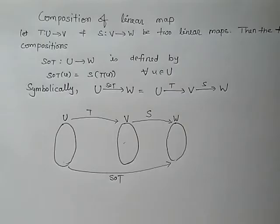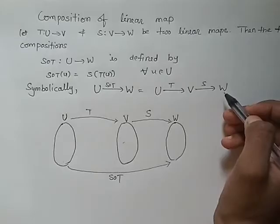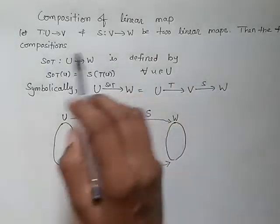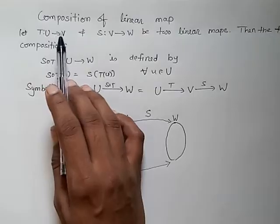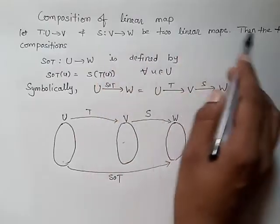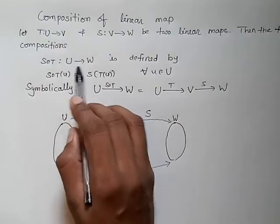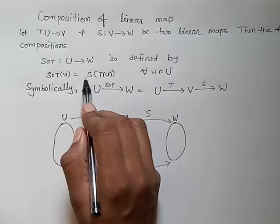Let us start with the definition of composition of a linear map. Before defining it, we must remember what composition means from earlier study — that will make it easier to understand. Suppose we have two mappings: T from U to V, and S from V to W. These are two linear maps. Their composition is defined as S∘T from U to W, defined as (S∘T)(u) = S(T(u)).